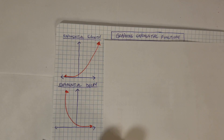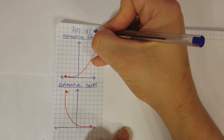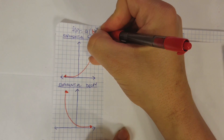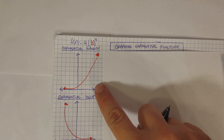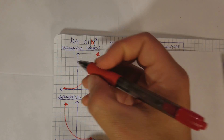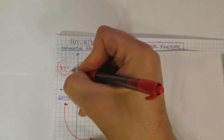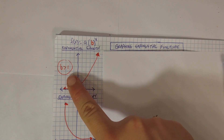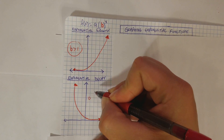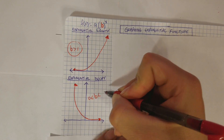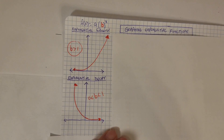How do we know whether it's going to be exponential growth or decay? The formula for an exponential function is f(x) = a times b to the power of x. The number b is the base. If b is greater than 1, we're going to have exponential growth. If b is a fraction between 0 and 1 — so 0 is less than b but b is less than 1 — we're going to have exponential decay.